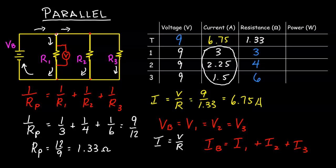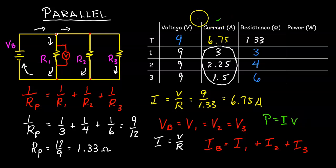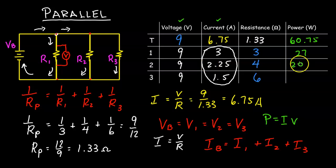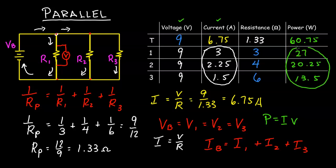Next we calculate power using P equals IV. The total power is 6.75 times 9 equals 60.75 watts. For each resistor: 3 times 9 is 27 watts, 2.25 times 9 is 20.25 watts, and 1.5 times 9 is 13.5 watts. Adding up the power of each resistor equals the total power of the whole circuit, which makes sense since the circuit is made up of each of these electrical components.